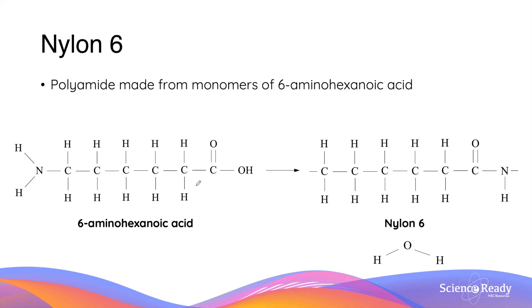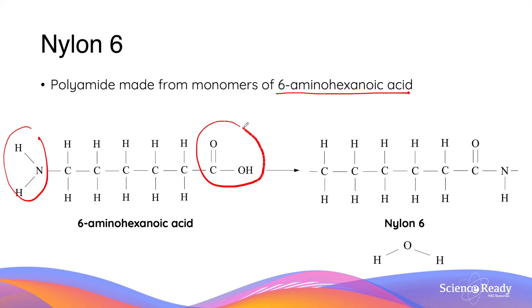A common example of a polyamide is nylon 6, which is made from 6-aminohexanoic acid. This monomer contains an amine functional group on one end and a carboxylic acid functional group on the other. The reaction between these functional groups between monomers results in the formation of an amide functional group, and each repeating unit of this polyamide contains six carbon atoms — hence the name nylon 6.